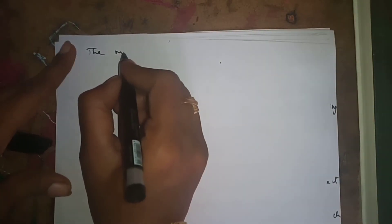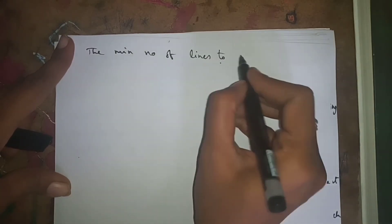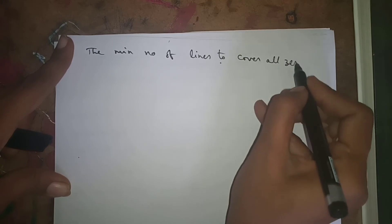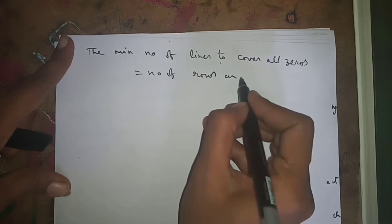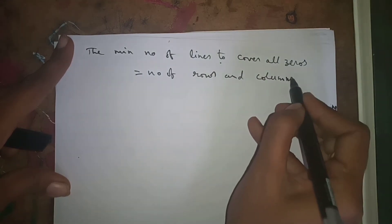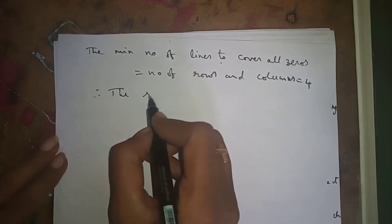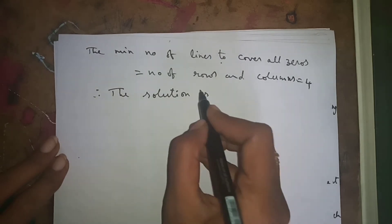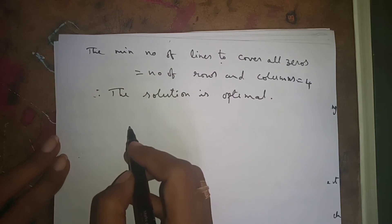The minimum number of lines to cover all zeros is equal to the number of rows and columns, which is four. We have obtained four lines, and the number of rows and columns is also four. Therefore, the solution is optimal.